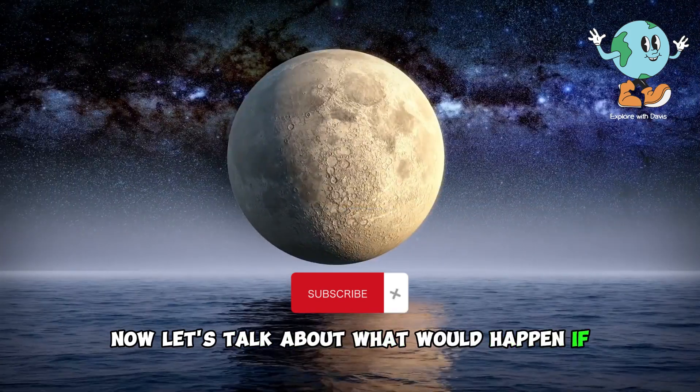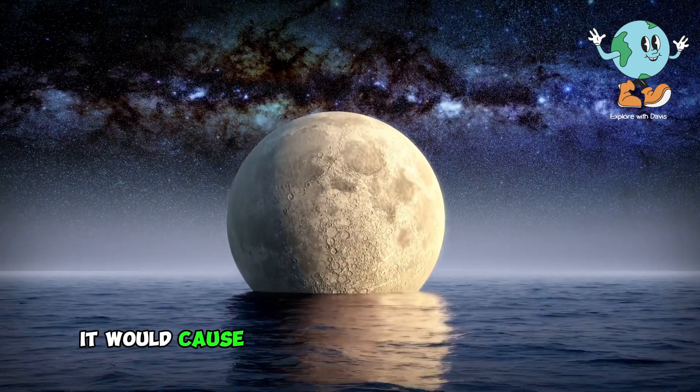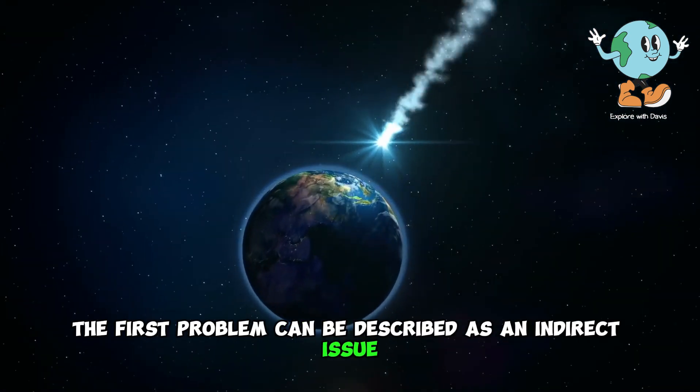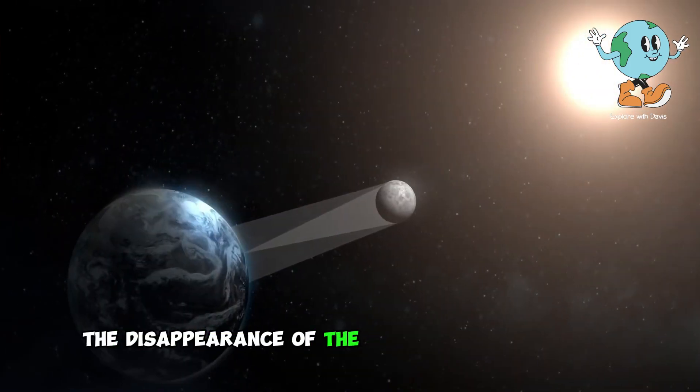Now, let's talk about what would happen if the moon collided with Earth. It would cause two extremely complex problems. The first problem can be described as an indirect issue, revolving around the disappearance of the moon from its position.